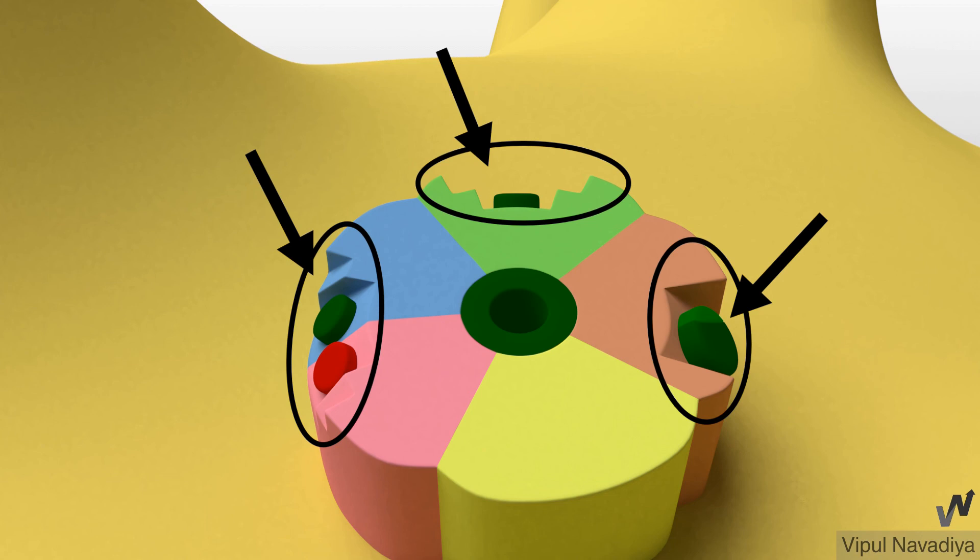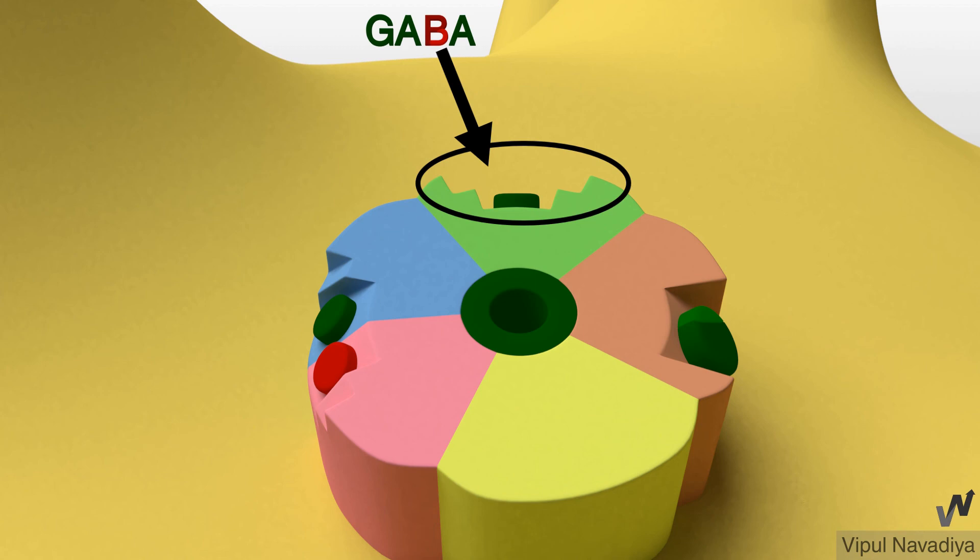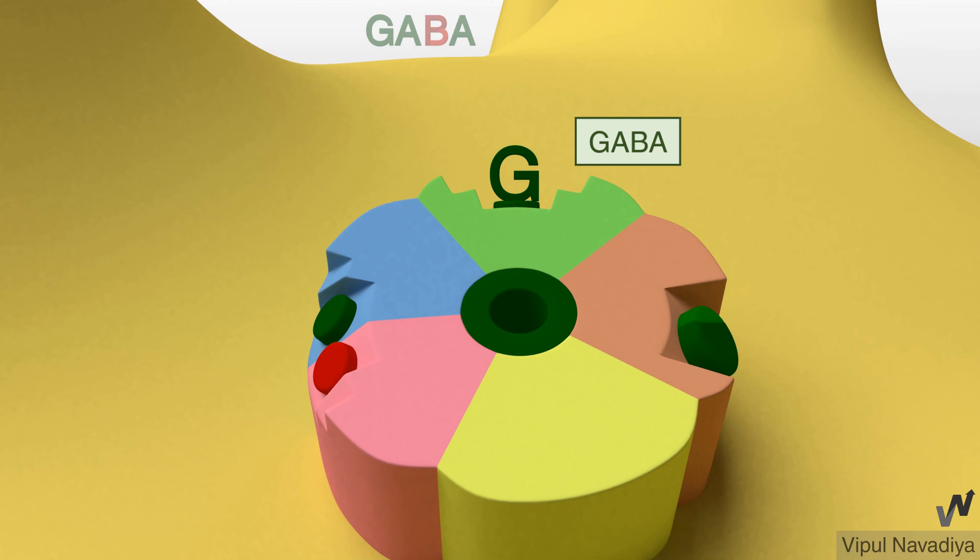Now various drugs acting on this receptor come in groups based on binding site. First group is for the binding site for GABA. GABA is the primary endogenous ligand for this receptor. GABA binding opens the chloride channel letting chloride entry.